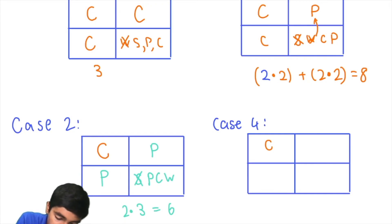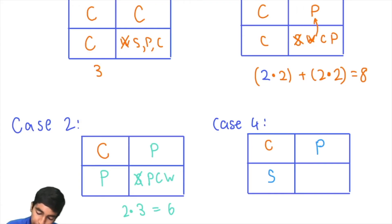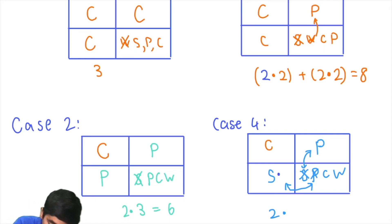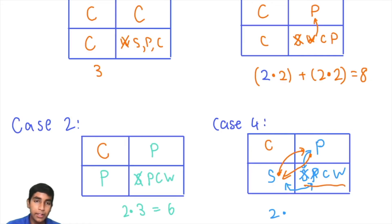Case four: one potato and one soybean in those two squares. The fourth square can't be soybeans (adjacent to potato) and can't be potato (adjacent to soybean), so it can be corn or wheat — two choices. We can also flip the positions of soybeans and potatoes, giving another factor of two. So 2 × 2 = four total for this case.